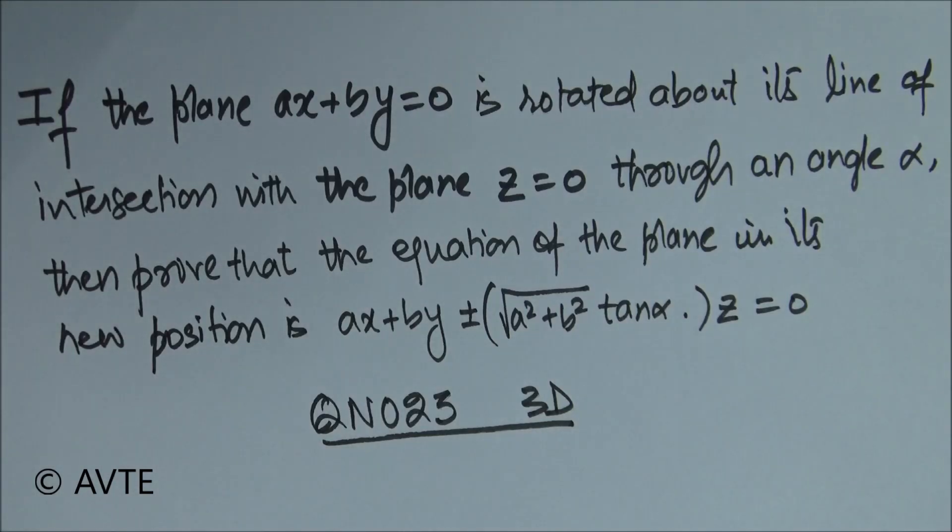Now the language is quite confusing, but if you read it again, the plane AX plus BY equals to 0 when it is rotated, that is it is making an angle of alpha with its line of intersection. So what is the line of intersection?